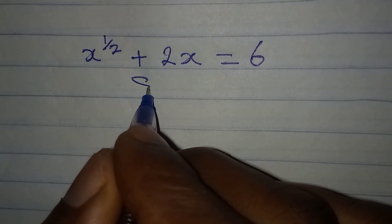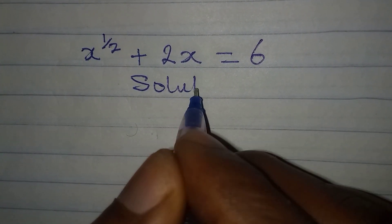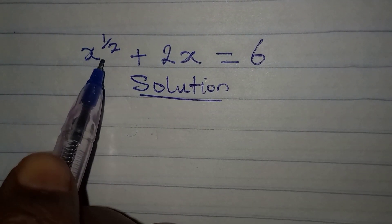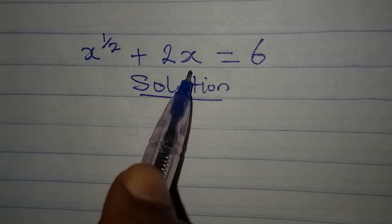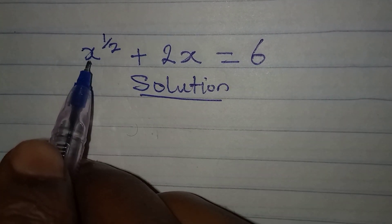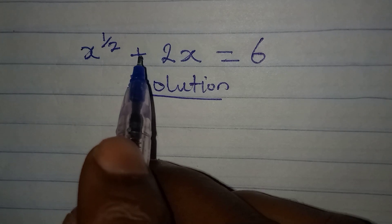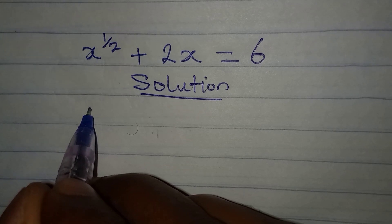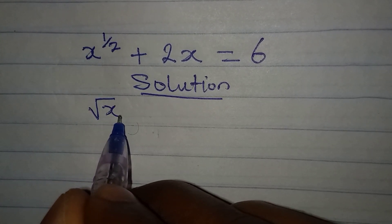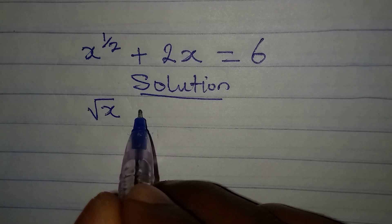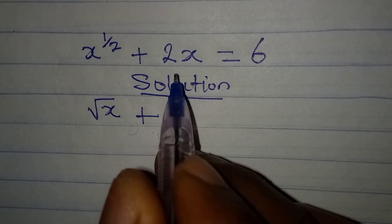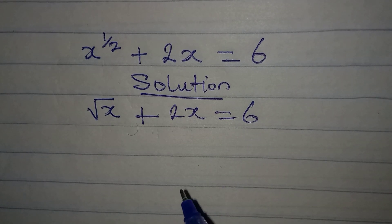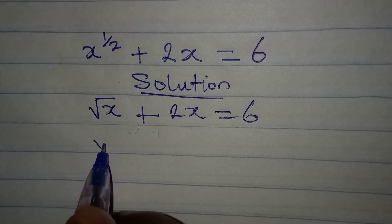Hello everyone, let's provide the solution to this problem. We have x to the power of one-half plus 2x equal to 6. Now x to the power of one-half is the same thing as the square root of x. So we have square root of x plus 2x equals 6.